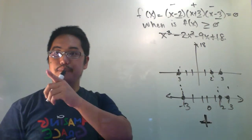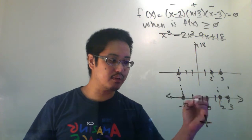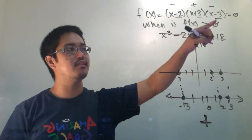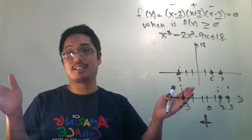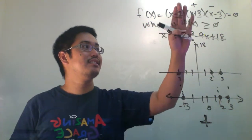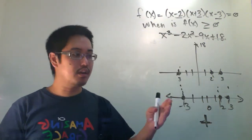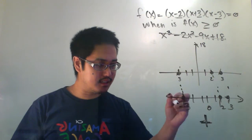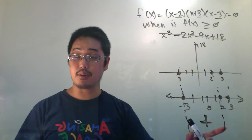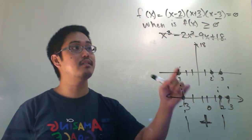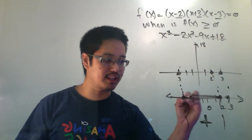So any number chosen in the region between negative 3 and 2 will give you a positive f(x) value. For zero specifically, we already know that positive number is 18. We tested this region and know that any number bigger than negative 3 but smaller than 2 gives a positive f(x) — which is what we want, so this region is good.